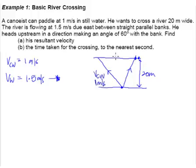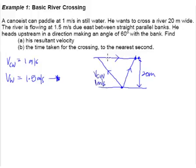Now let's fill in the blanks — put in arrows and label the sides of the triangle. This is very important because your teacher will mark according to your diagram. You must get the diagrams right with the correct arrows facing the right direction and the right numbers. This side is V_W — the river current flowing at 1.5 meters per second.